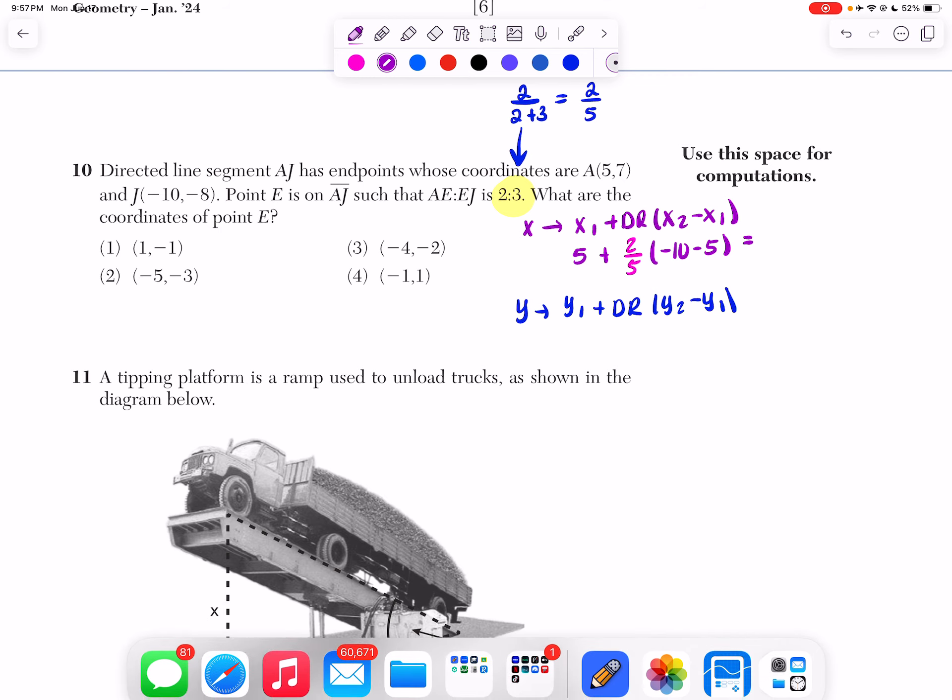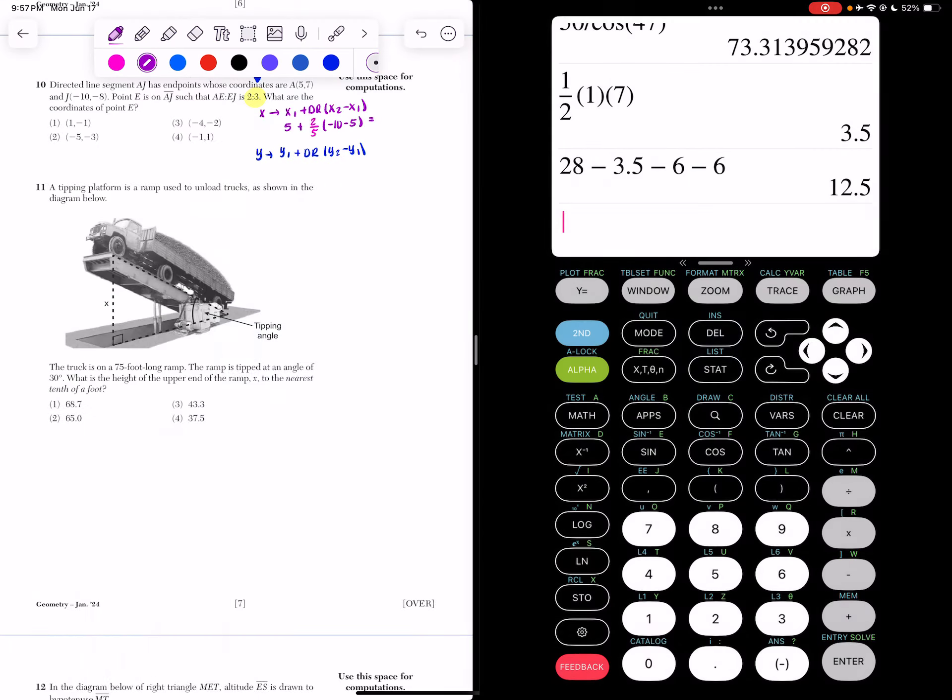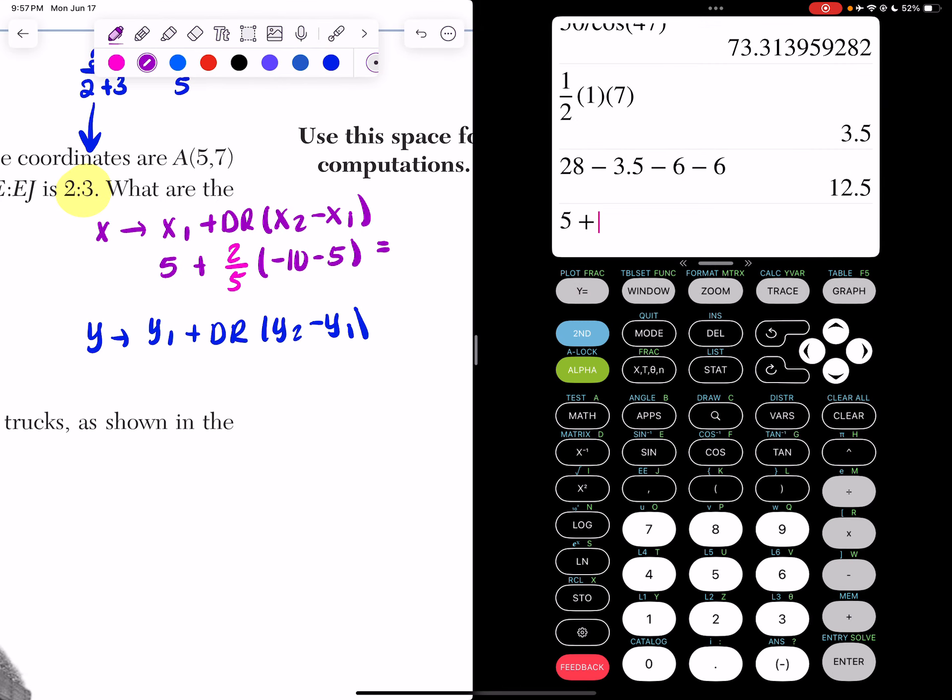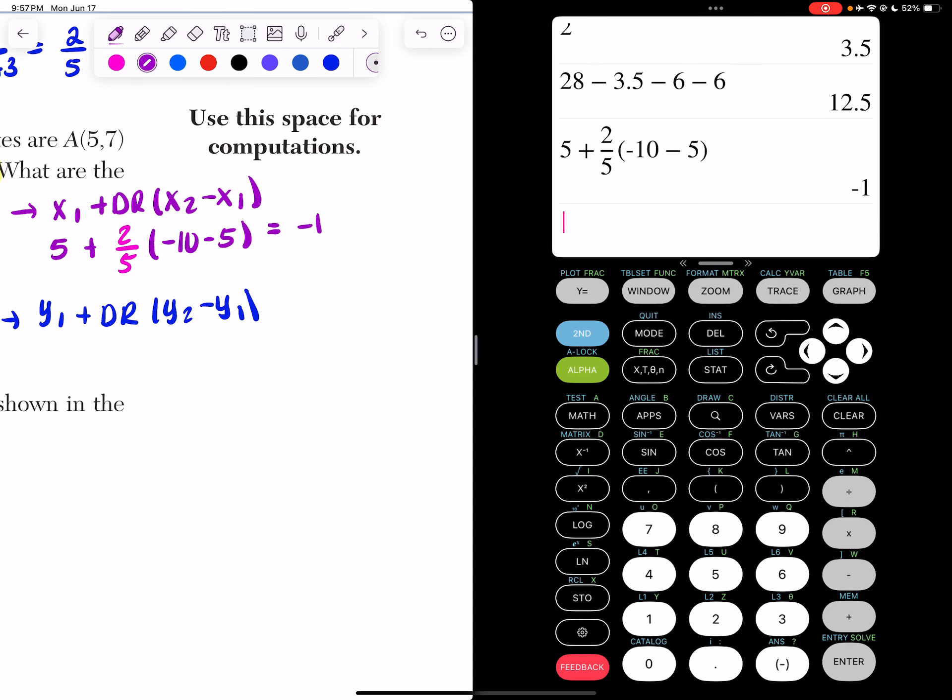So when I type that into my calculator, let's see what it gives me. So I'm going to do 5 plus 2 over 5 times negative 10 minus 5. When we type that in, that gives us negative 1.